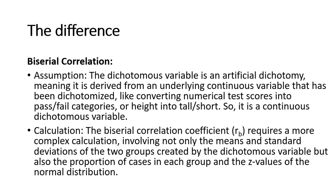The biserial correlation coefficient r_b requires more complex calculations involving not only the means and standard deviations of the two groups created by the dichotomous variable, but also the proportion of cases in each group and the z-values of the normal distribution. This is a cumbersome calculation, but we'll try to make it simpler for you.